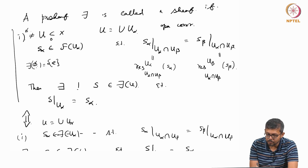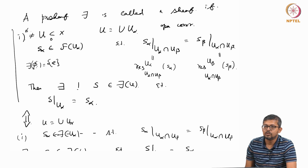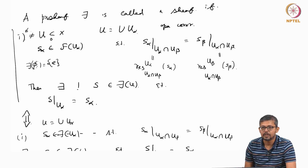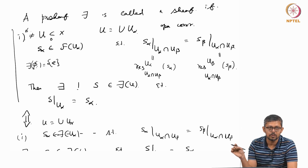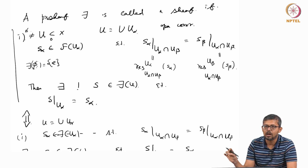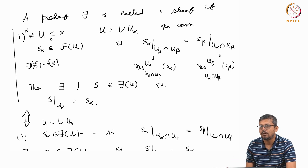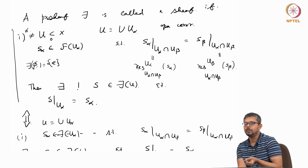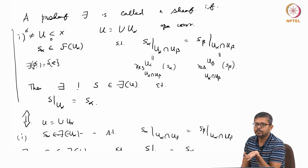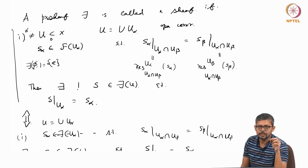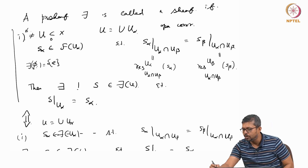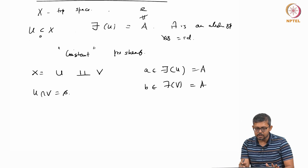For the empty set, the associated group is the trivial group — it is the final object in the category of groups, since this is a contravariant functor. So F of U intersection V, which equals F of the empty set, is the trivial group.